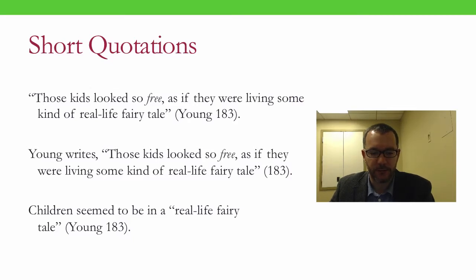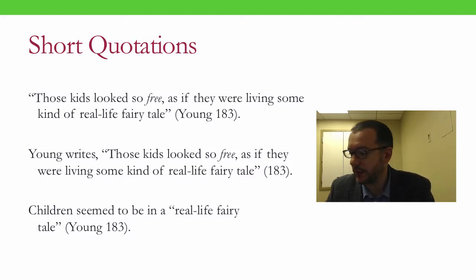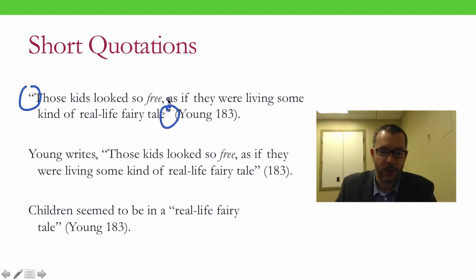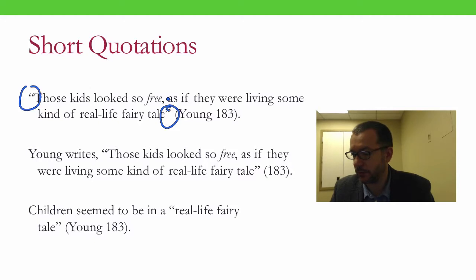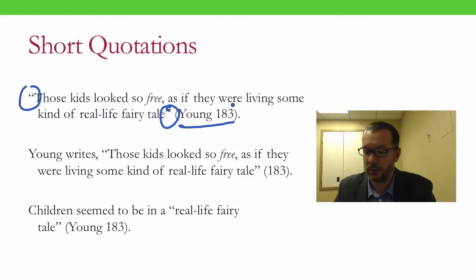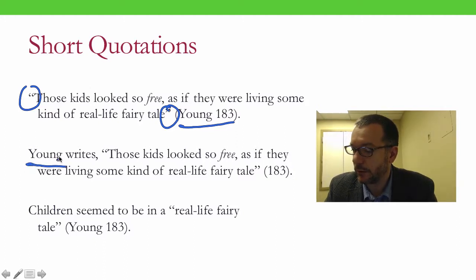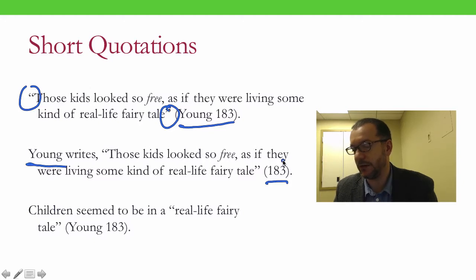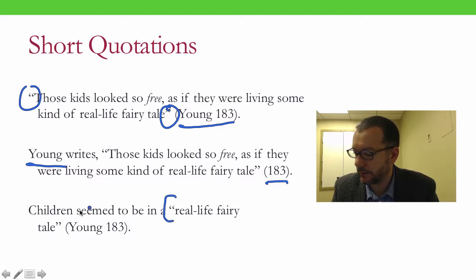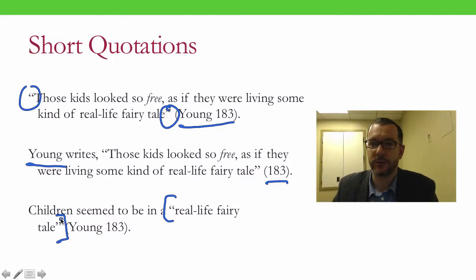Short quotations — fewer than four typed lines of prose, or fewer than three lines of verse — should be enclosed within double quotation marks. The quotation is followed by parentheses enclosing the author's name and the page number on which the quote appears. If the author is mentioned in the sentence, there's no need to include their name in the parentheses — just the page number. This applies not just to complete sentences, but also to phrases that are direct quotes from a source.